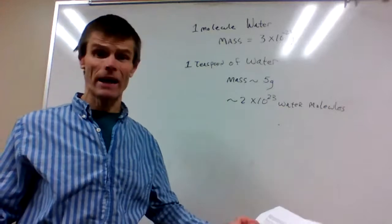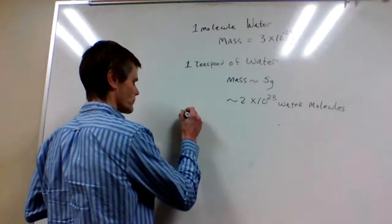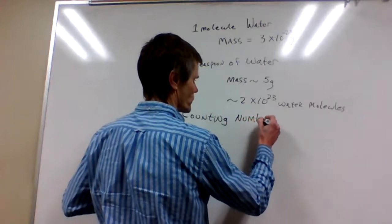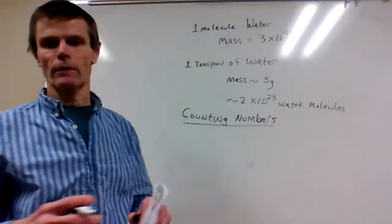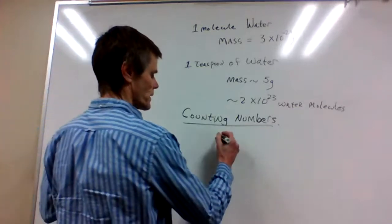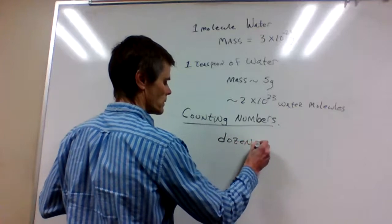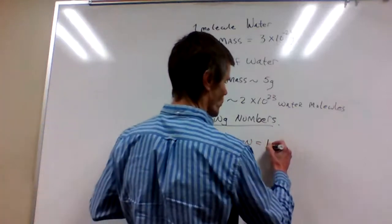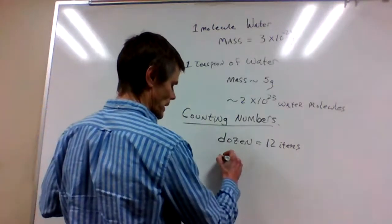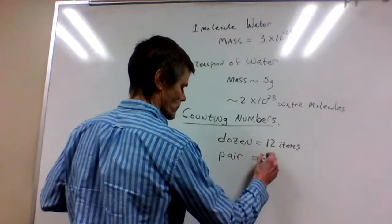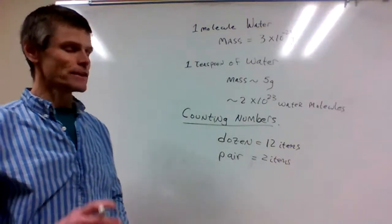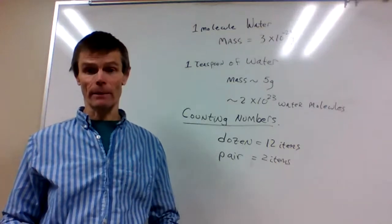Let's think about what a counting number is. Counting numbers are something we're already familiar with. For instance, a dozen — when you go to the store you might buy a dozen eggs, and a dozen is 12 items. Another counting number we're familiar with is a pair — when we go and buy shoes, we buy a pair of shoes, meaning two shoes. In science, we measure and use a counting number known as the mole.